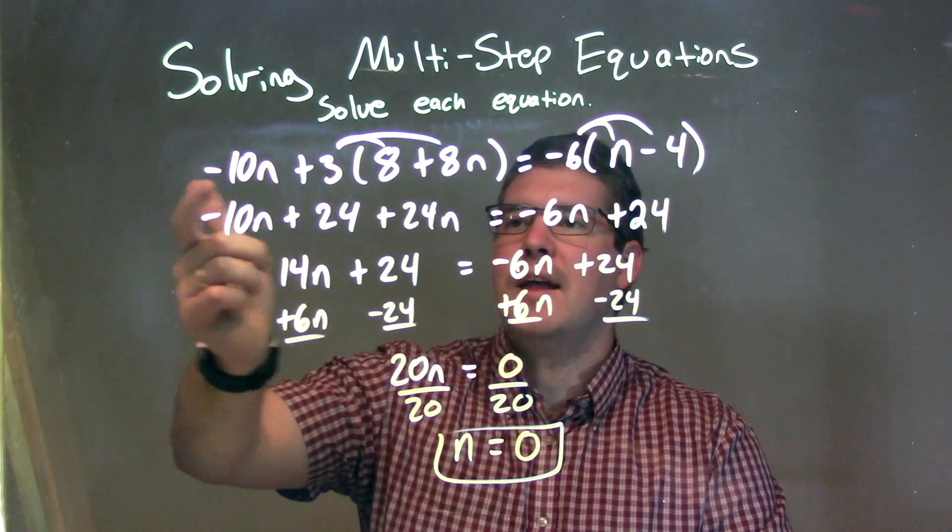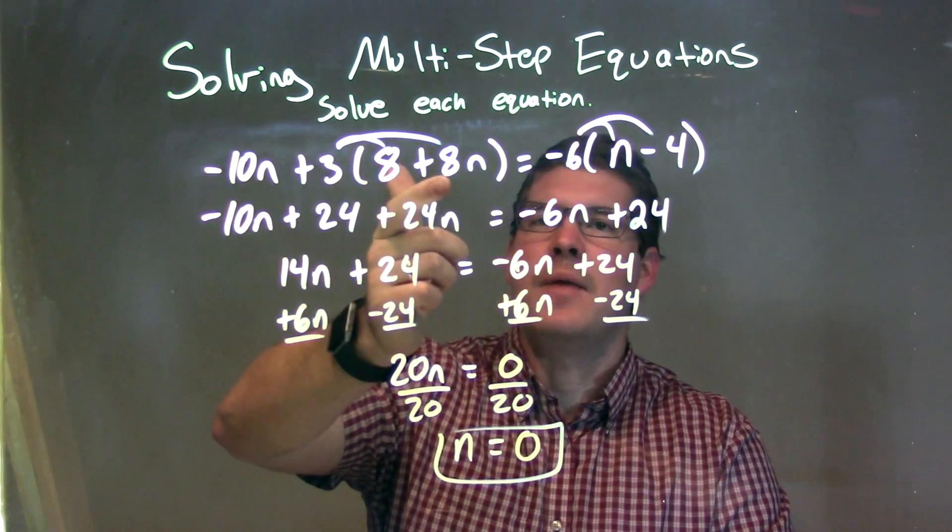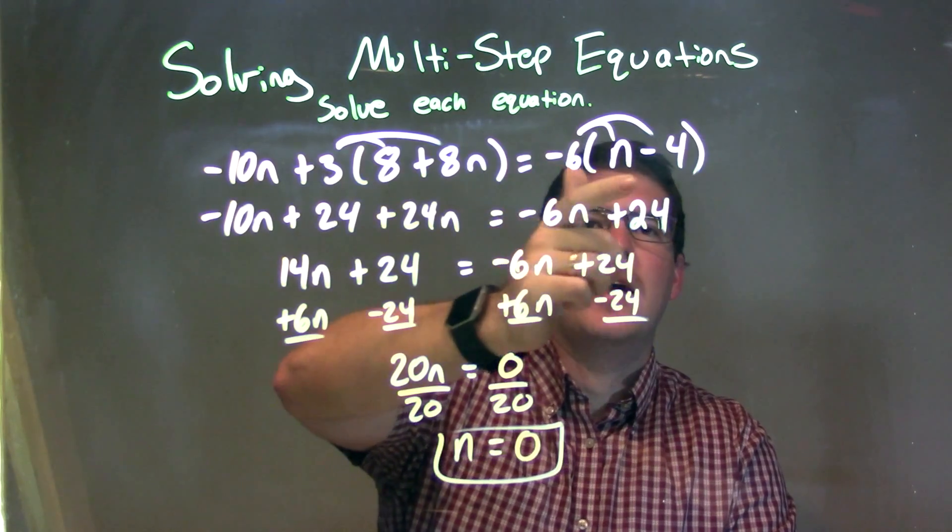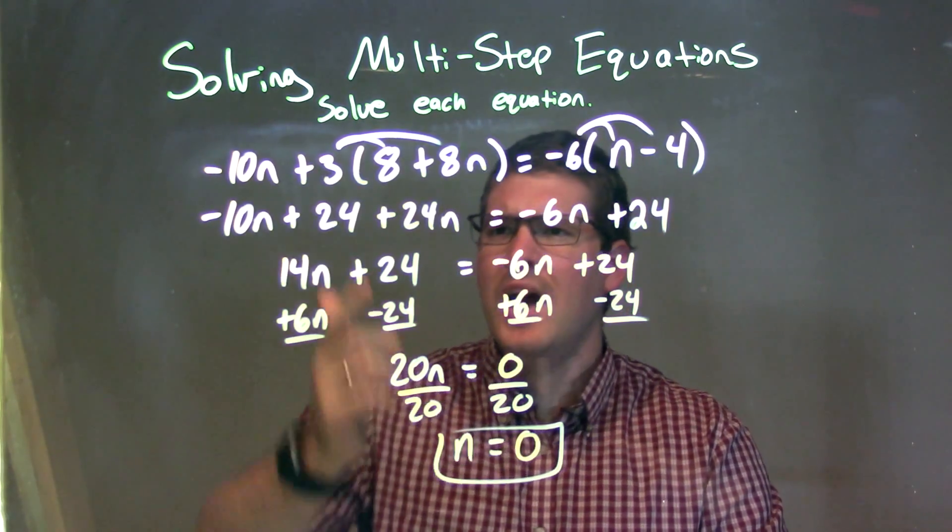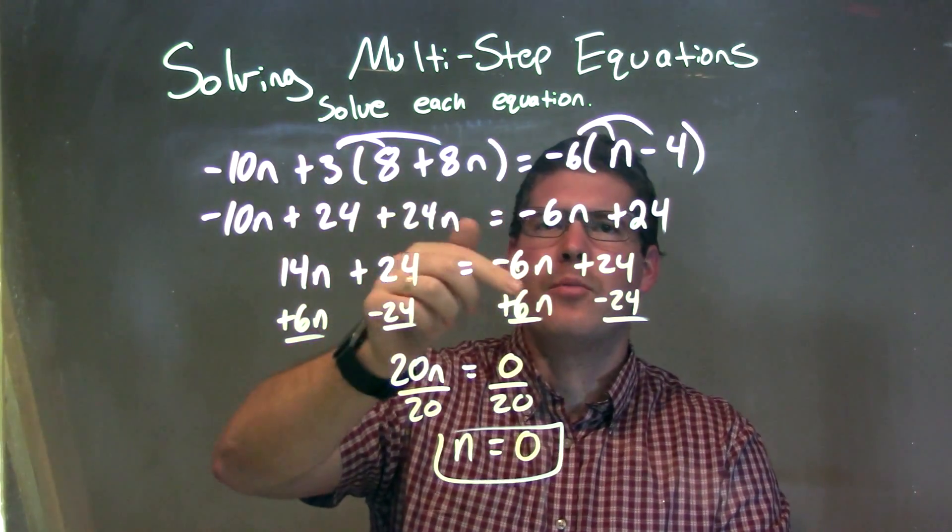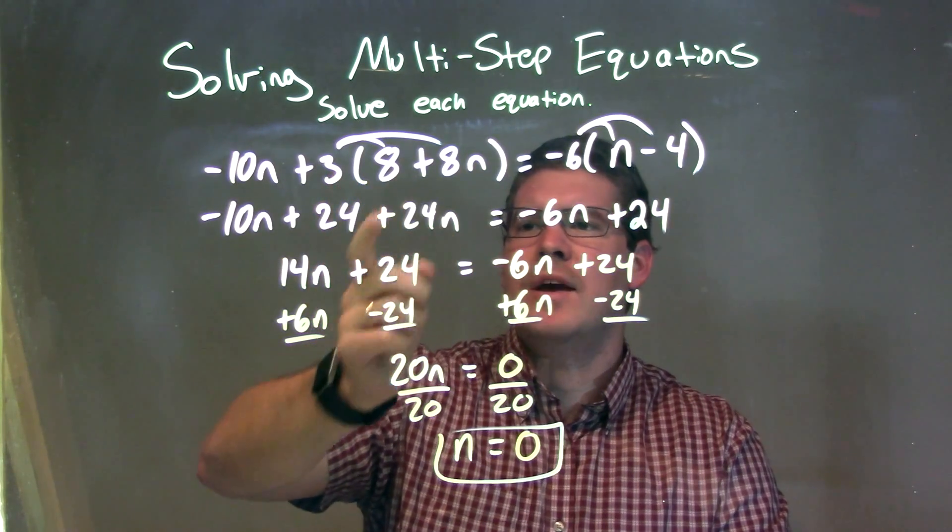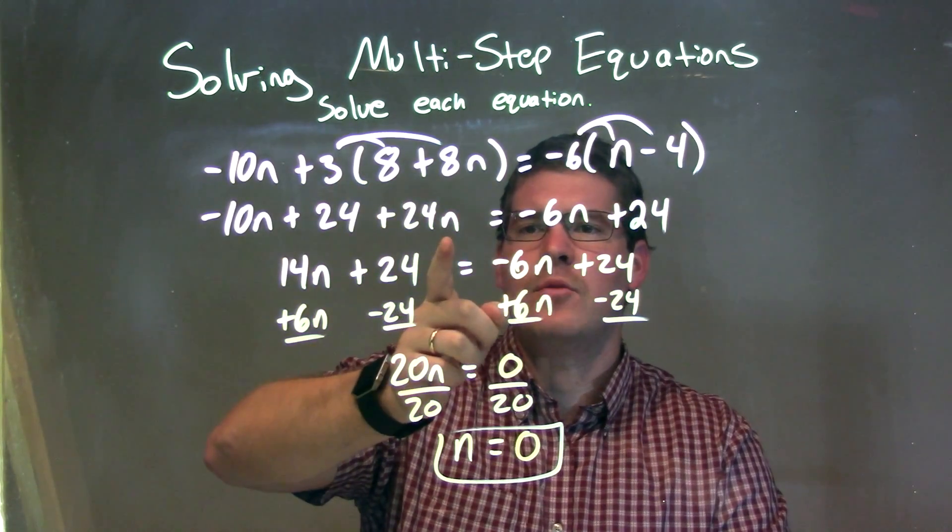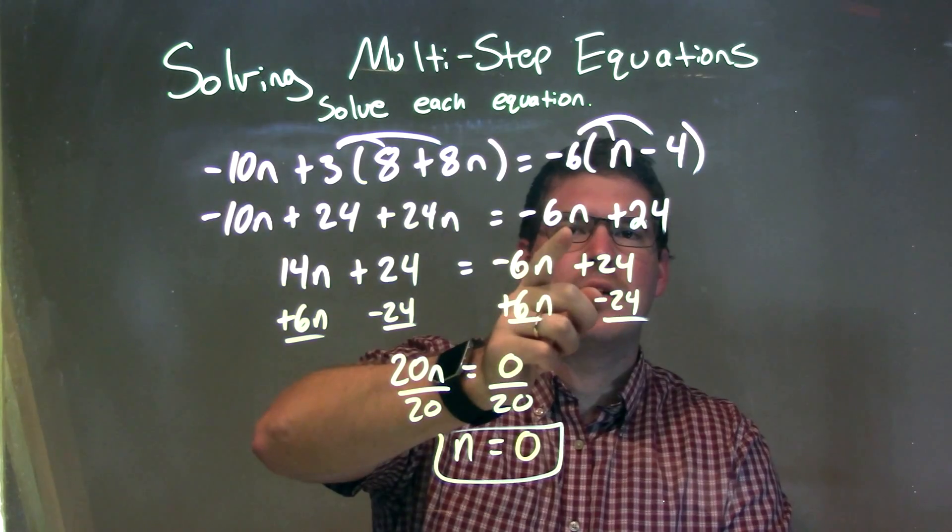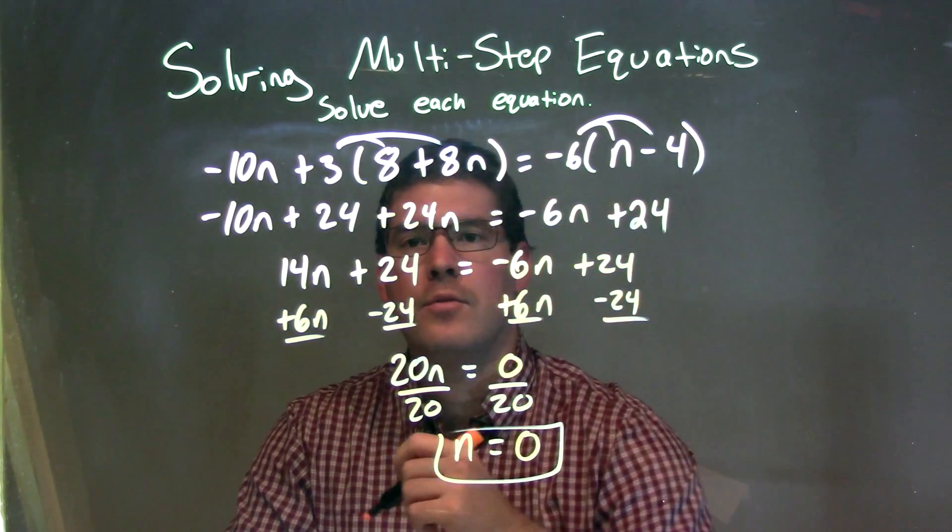So as a recap, we're given -10n + 3(8 + 8n) = -6(n - 4). I had to distribute to both parentheses there, giving me 3 times 8 being 24, 3 times 8n being 24n, and -6 times n being -6n, and -6 times -4 to be a positive 24.